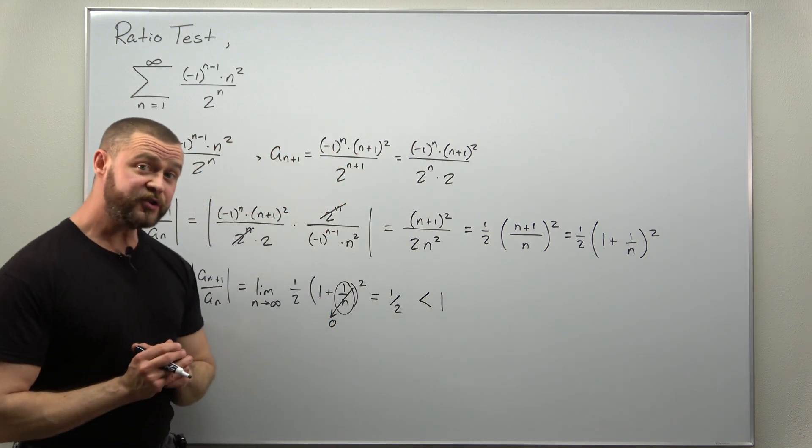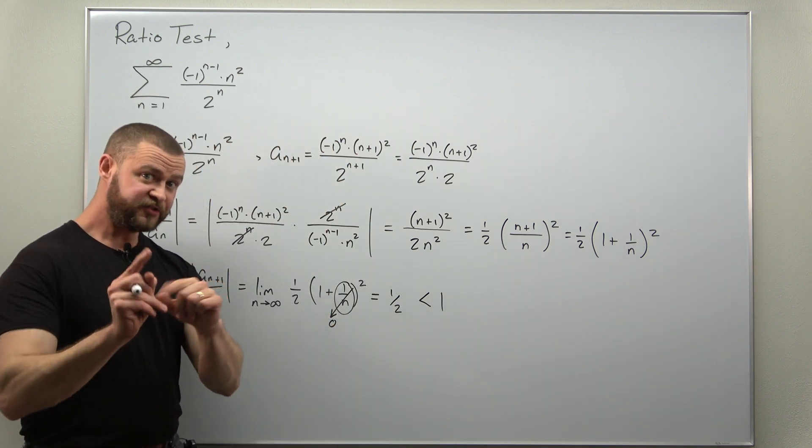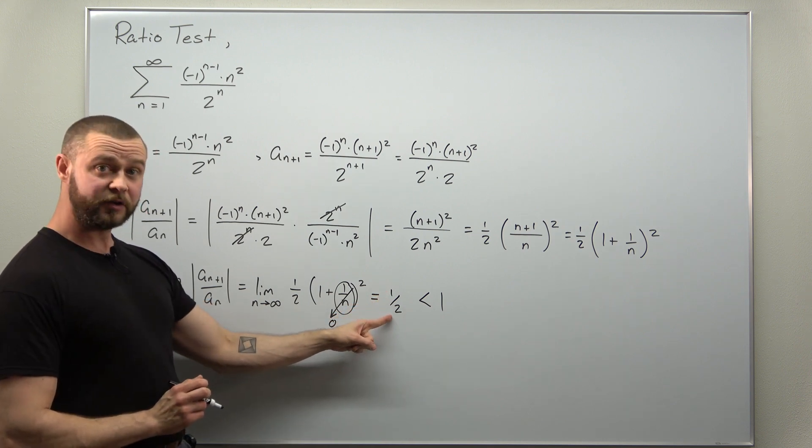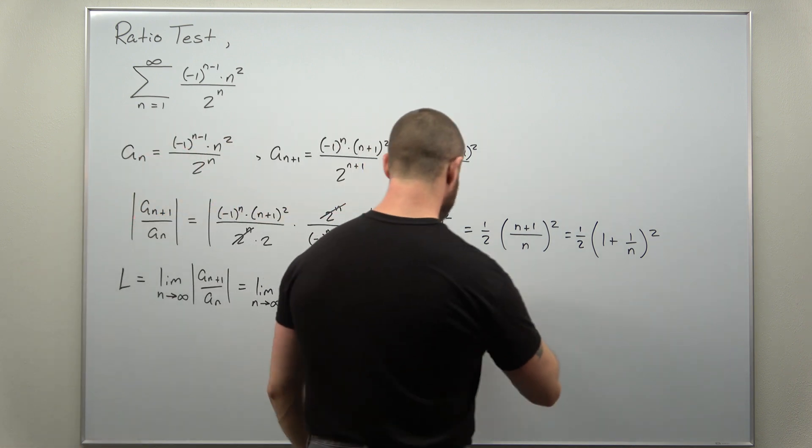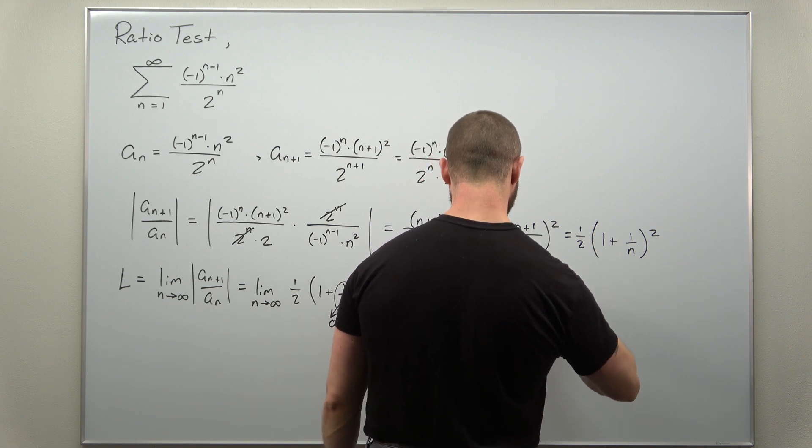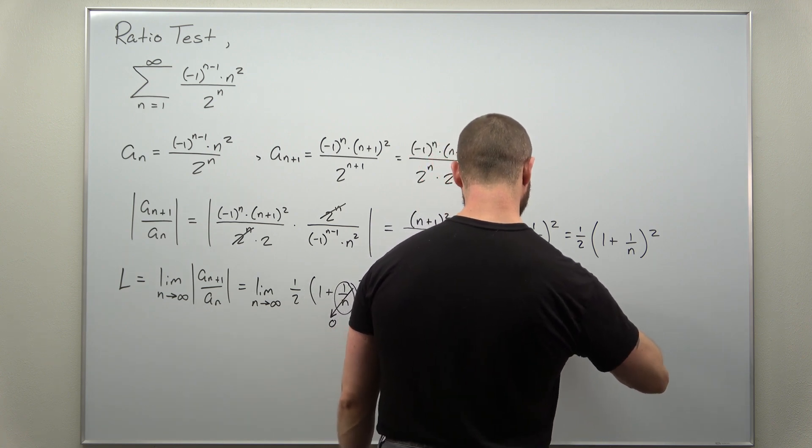And we actually reach a conclusion here. Let's just be precise with what we can conclude from the ratio test. If your limit is less than one, then we get to determine that our infinite series is absolutely convergent.